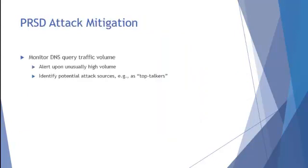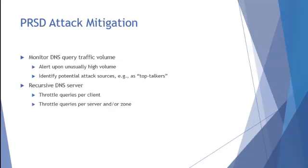So what can you do about this attack? You can monitor your DNS query traffic volume. If you've got a lot of volume coming from a given set of recursive servers, it can help you identify or pinpoint the origin of the attack, and you certainly want a heads up when volume starts going up. For the recursive server itself, whether you're a service provider or within an enterprise, you want to look at throttling those queries per client, allowing a given client only a given quota, if your DNS server implementation supports it.